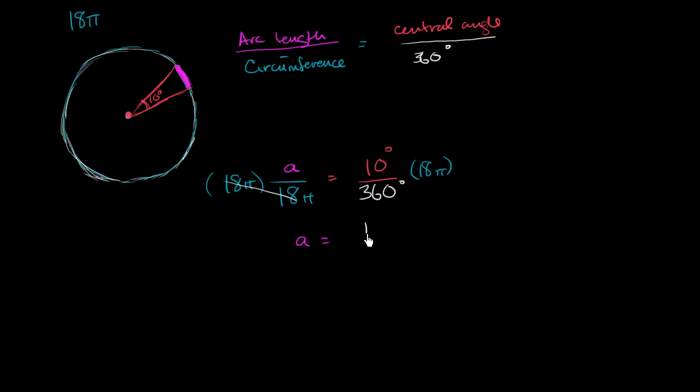It's 18π over 36, which is the same thing as π over 2. So this arc right over here is going to be π over 2, whatever units we're talking about, long.